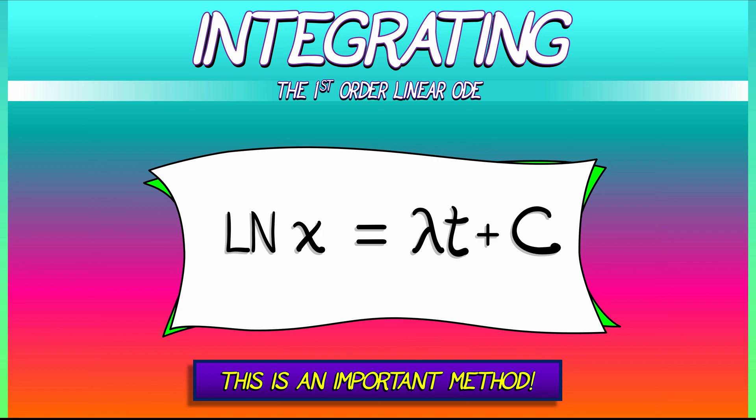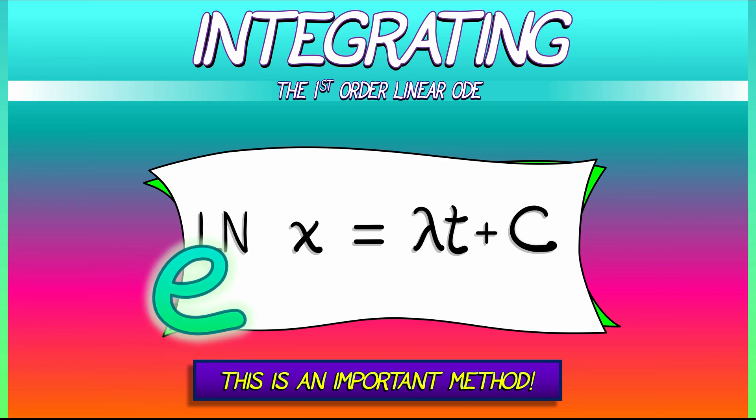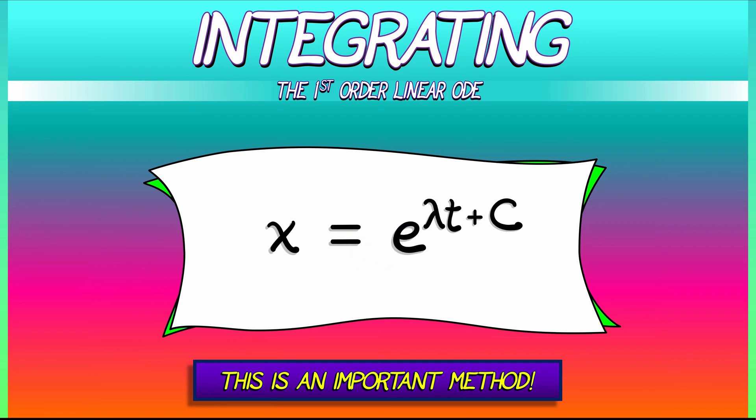To solve for x, we exponentiate the entire equation. e to the log of x is x. On the right, we have e^(λt+C). We can split that up into e^(λt) times e^C. That e^C is a constant. That constant, we're going to call x₀ because it's the initial condition.